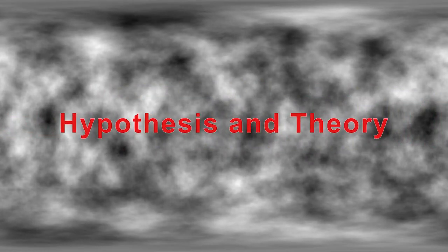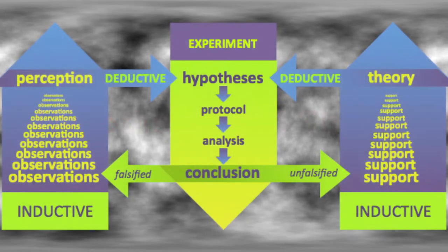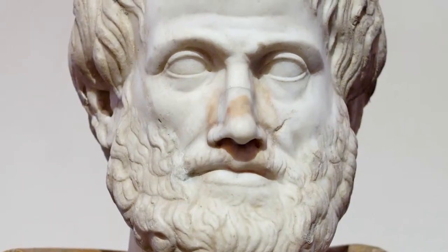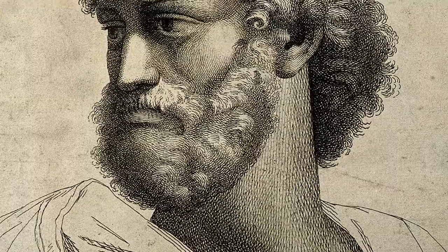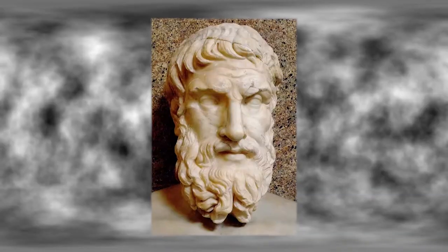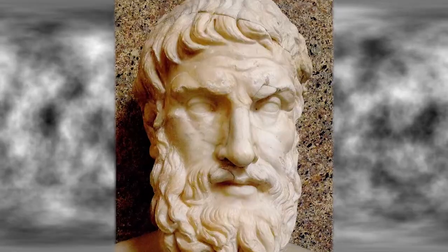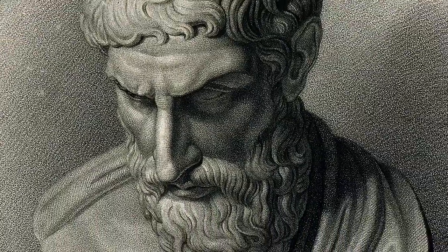The best system humanity has created to identify truth is the scientific method. This grand method began with Aristotle, Greek philosopher and scientist, who first proposed the inductive-deductive method. Then Epicurus, Greek philosopher, who built on this idea and laid out his first rule of inquiry into physics. The scientific method was expanded by many others after this start.